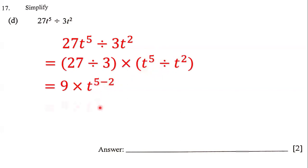What is 5 minus 2? Well, 5 minus 2 is 3, and so we have 9 times t to the third power. Bringing them together, we have 9t to the third power. And so that means our answer to this question is 9t³.